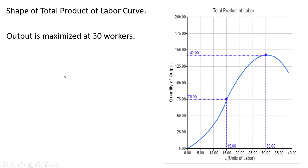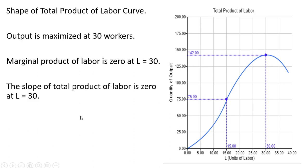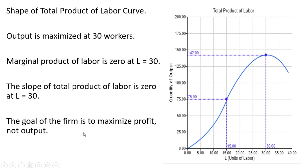A few things to note about this curve. Output is maximized at 30 workers, where maximum output is 142 units. The marginal product of labor is zero here — when output is maximized, the slope of the total product of labor is zero. If you were to draw a tangent line at the top of the hill, it would be horizontal, and the slope of a horizontal line is zero. Remember, the goal of the firm is not to maximize output but to maximize profit, so the firm will most likely hire fewer than 30 workers.